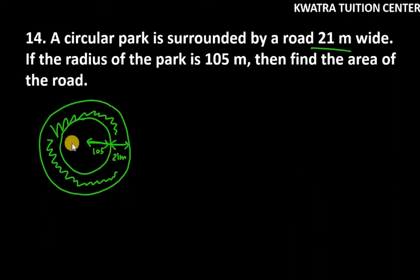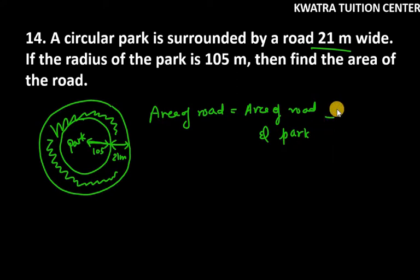Then we have to subtract the area of the park from it. Then you will get the area of the road, that is the shaded part. So now let's find the area of the road. Area of road equals area of road and park, subtract area of park.